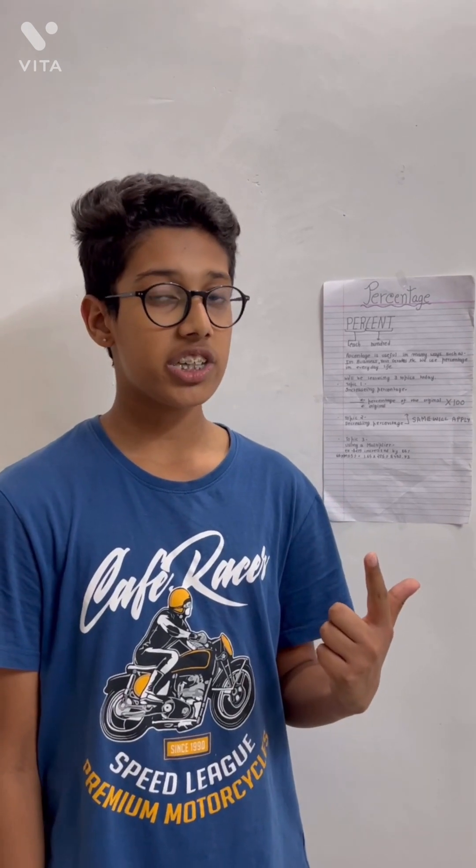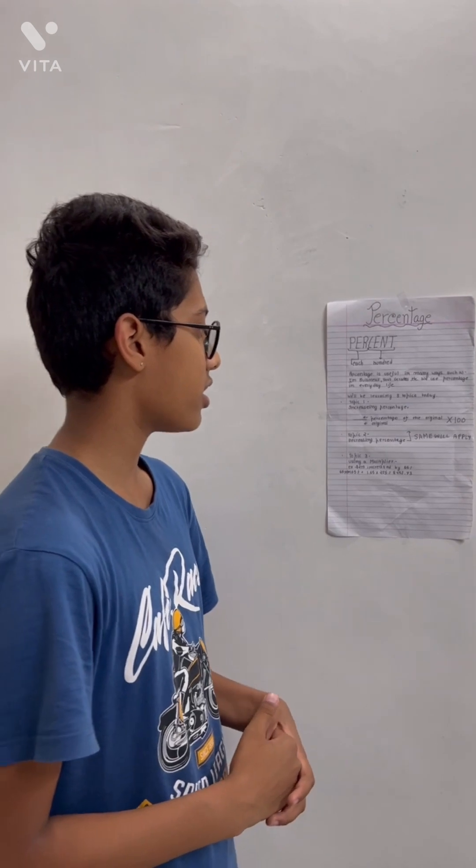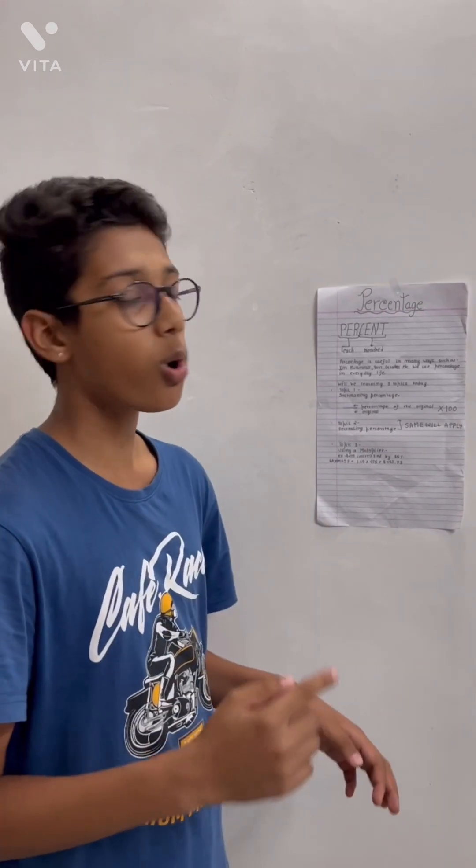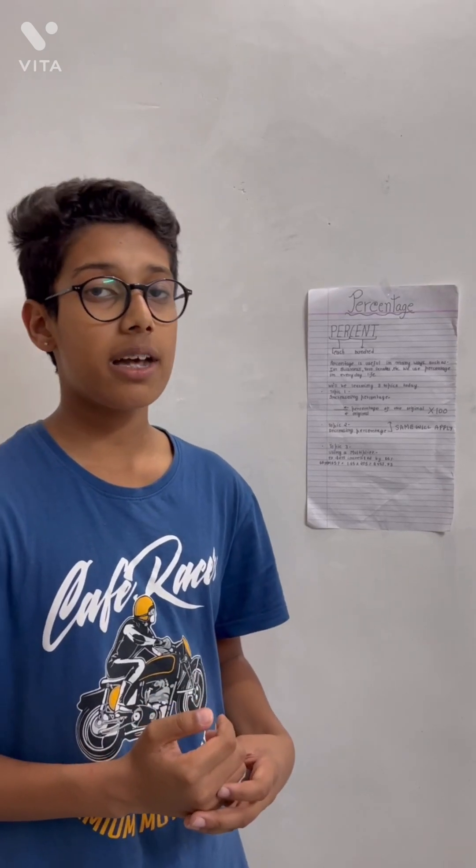First, increasing percentage: the portion of the original will go on the top and the original will go at the bottom. Then we'll multiply them by 100 and we'll get a final answer. This is the traditional method.